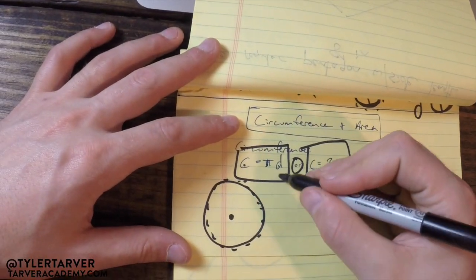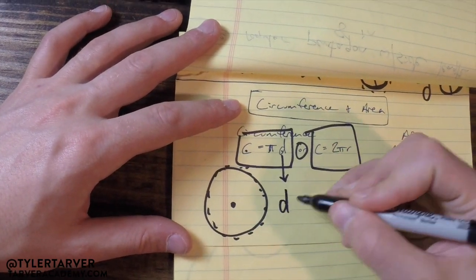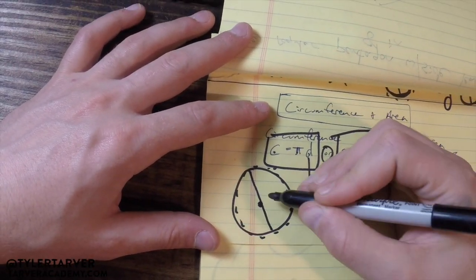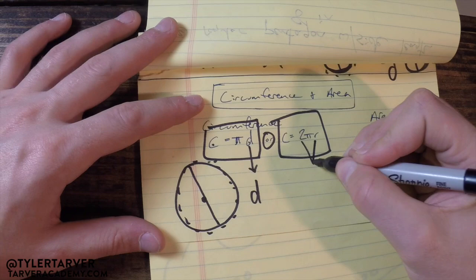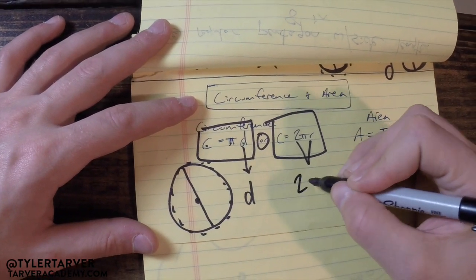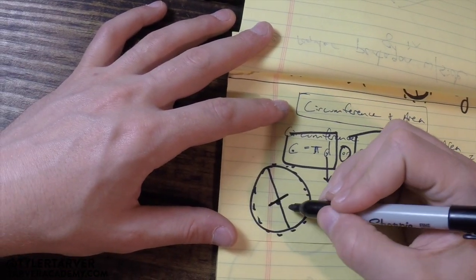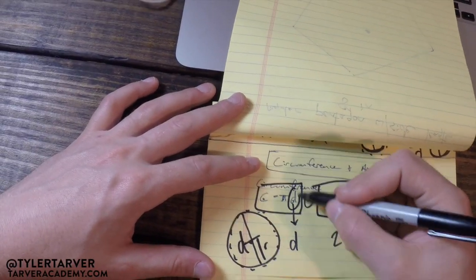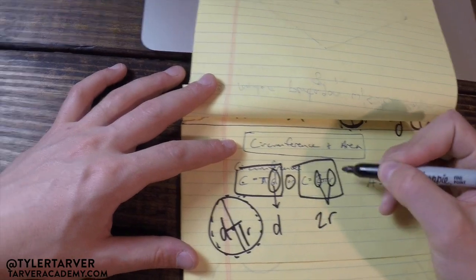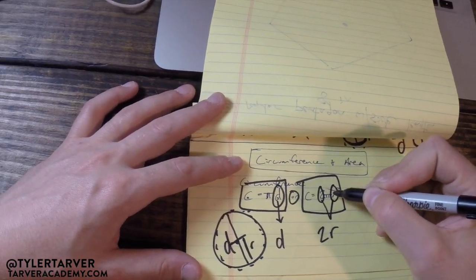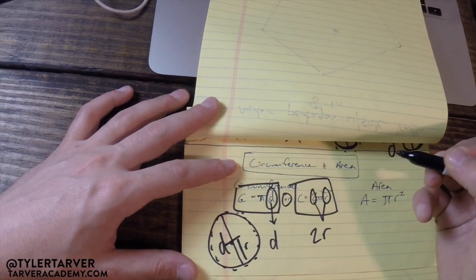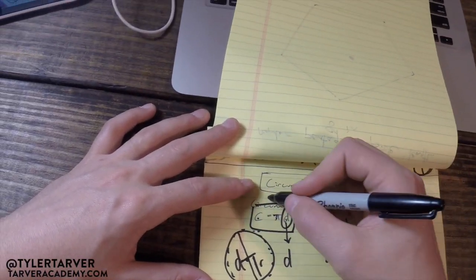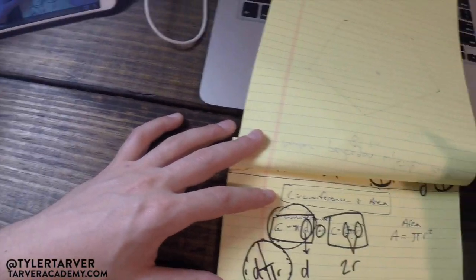Why does that work? Well, because d for diameter goes all the way across, 2r would be 2 times the radius, which is half of the diameter. So essentially you've got two options: you can either do diameter, or you can do the radius, double it to get the diameter, and then still multiply it times pi.